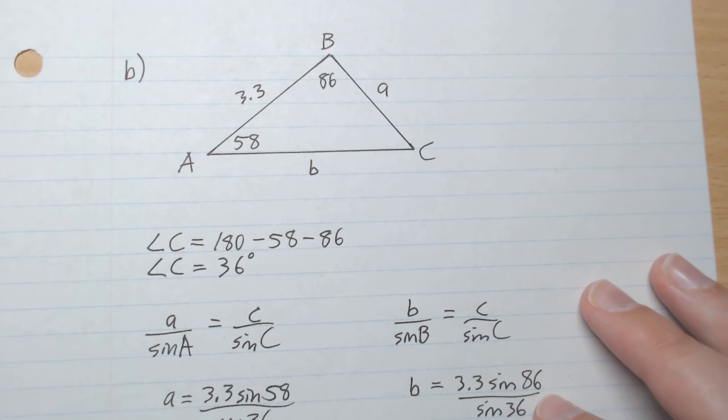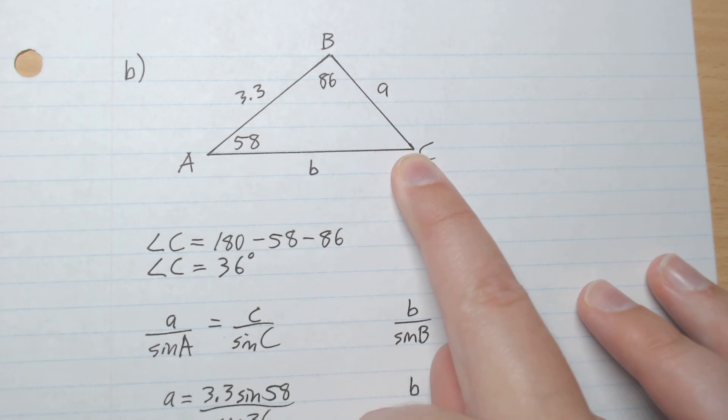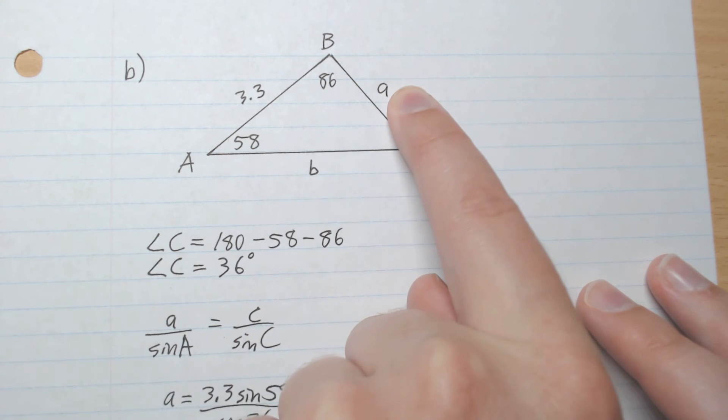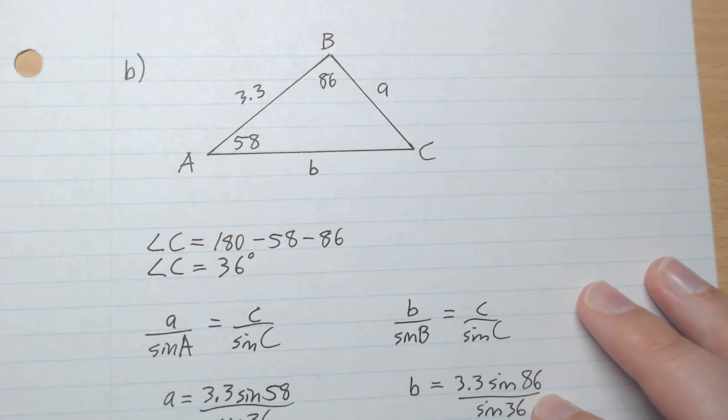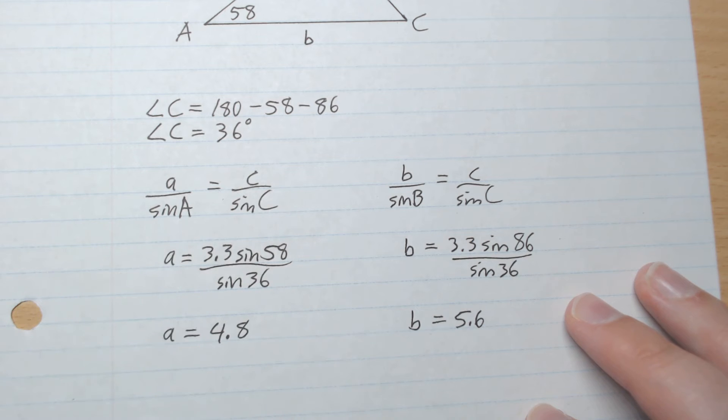So what do we have? We have side c and angle C. We have angle A but not side a. So we're going to write our equation like this, multiplying sine A to both sides. So a is 4.8.